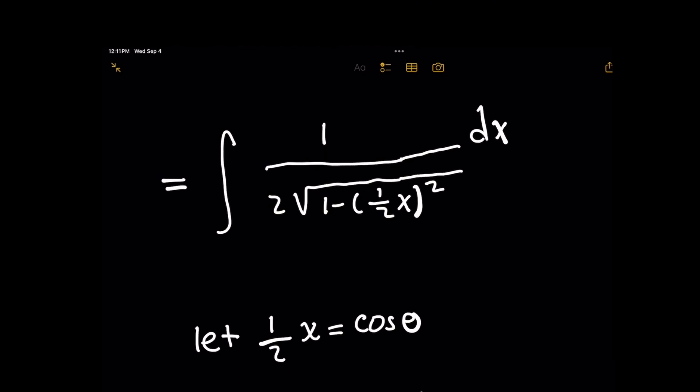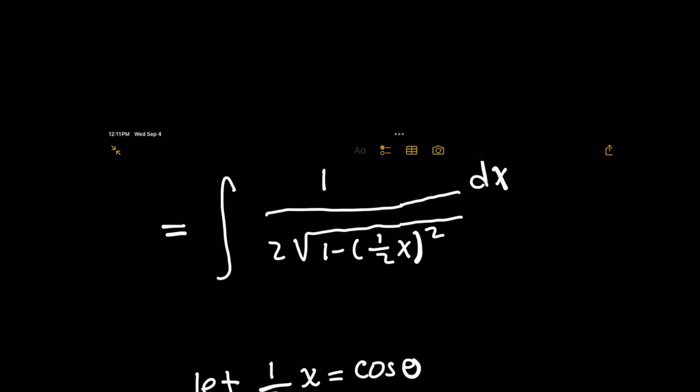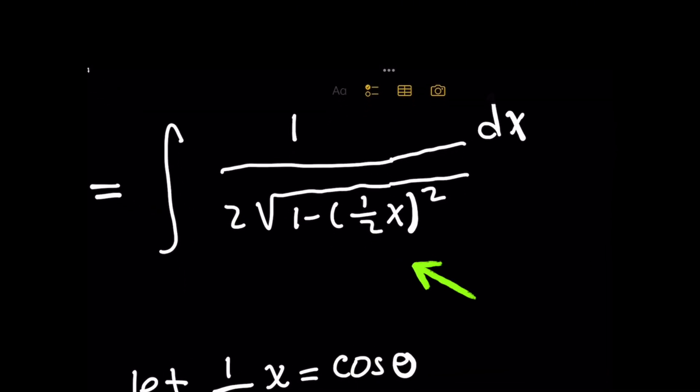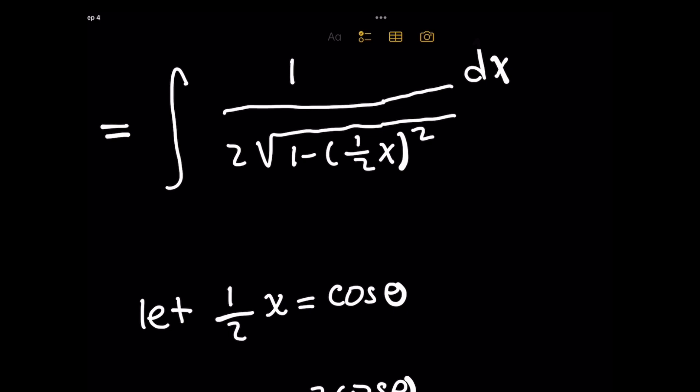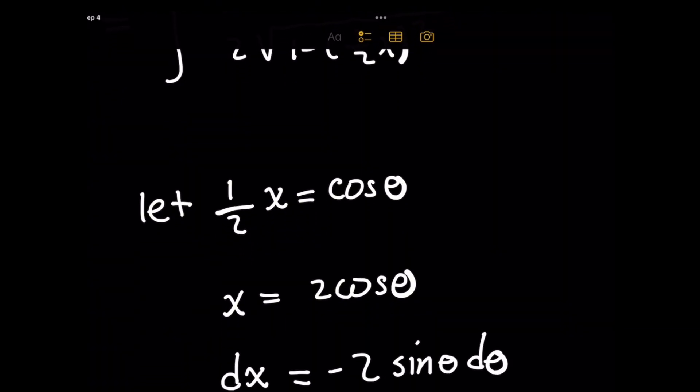the way we can bring the trig identity into the problem is we want 1 - something² to look like 1 - (cos θ)². So why don't we set that something to cos θ? In our case, that's (1/2)x. Then when you solve for x by multiplying both sides by 2, you have x = 2cos θ. The reason why a u-substitution now works is because when you take the derivative of both